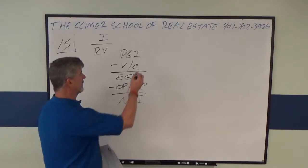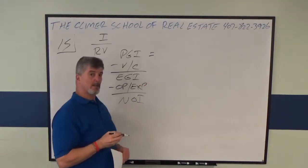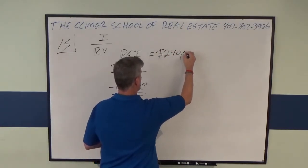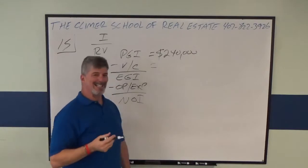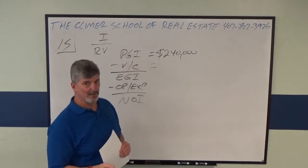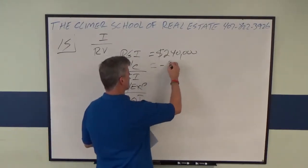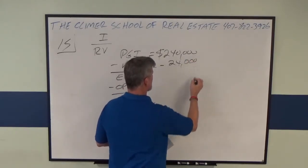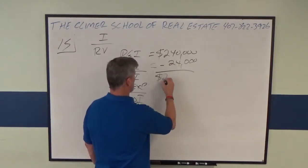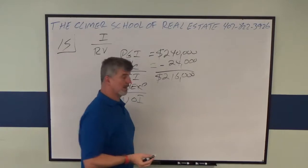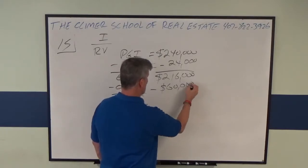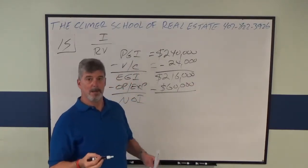So first of all, we're just going to fill in the blank. PGI, according to the problem, is $240,000. Vacancy and collection losses are 10% of potential gross income. And if you put that in your calculator, that's $24,000. So we're going to subtract $24,000 from $240,000. That gives us $216,000. Operating expenses are $60,000. So we're going to subtract that. That means that NOI is $156,000.